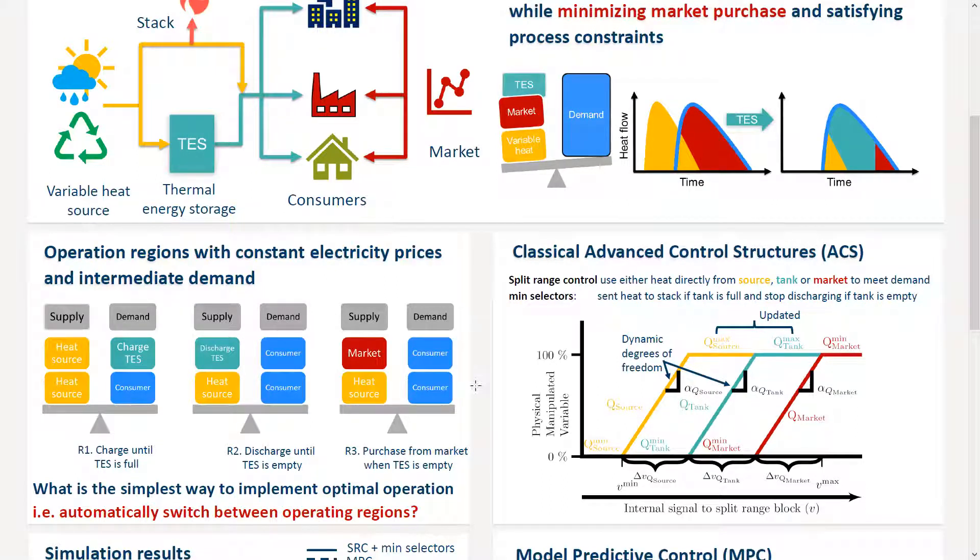To do that, we have two different control structures. One of them is a decentralized control, where we use a combination of split range control and mean selector. Split range control allows us to use either heat from the source, and when this one is at maximum capacity, we will use heat from the tank. When the tank is discharged, we will buy heat directly from the market. The mean selector allows us to satisfy the process constraints.